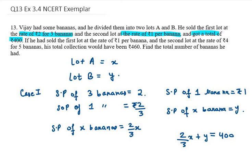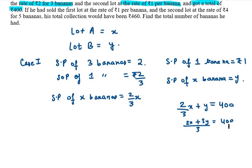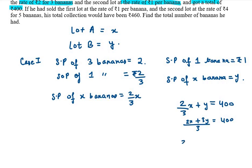Now we need to reduce this so we can get a simpler form. You need to take the LCM of the left-hand side, so it will be 3 here. 2x plus 3y equals 400. My equation will be 2x plus 3y equals 400 times 3. 400 times 3 is 1200. This is my equation number 1.